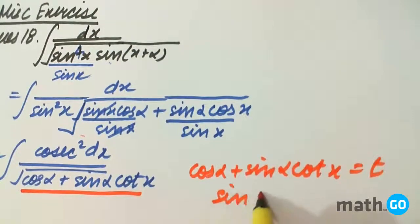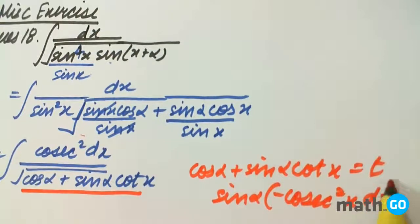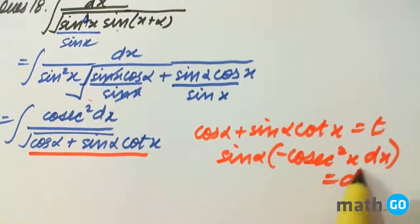We will be left with sin alpha into minus cos x square x dx. That will be equal to dt.